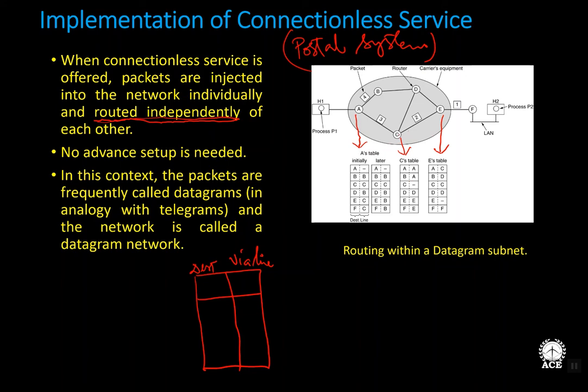Router C's routing table: C to A via direct line A, C to B via A, C to D via direct line D, C to E via direct line E, C to F via E. The routing tables are designed this way. Later, we will have a more detailed discussion on routing table structure and how information is furnished in the routing table.